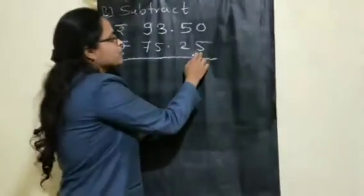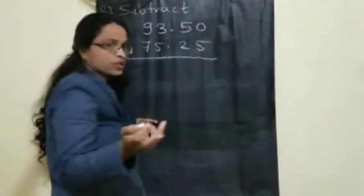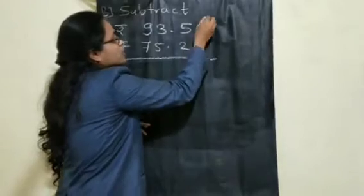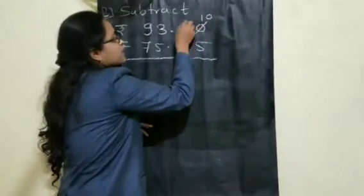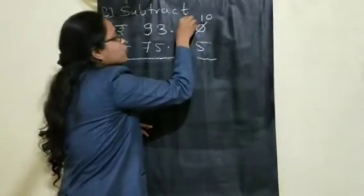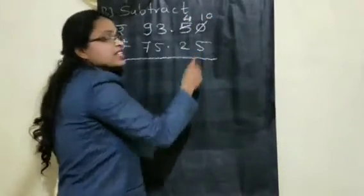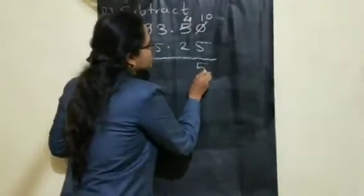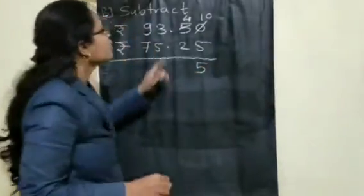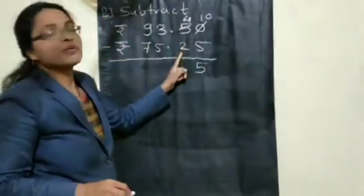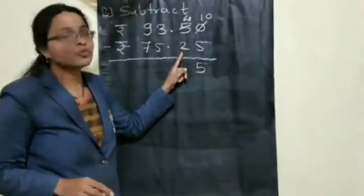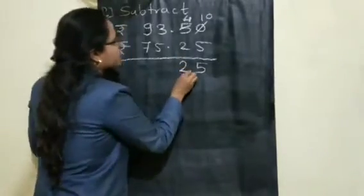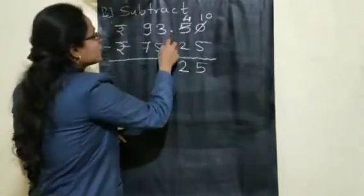Can you subtract 5 from 0? No. So you have to borrow — it will become 10, and how much left here? 4. 10 minus 5 is 5, so write 5. Now, 4 minus 2 is 2, so here you get 25 paise. Write the dot as it is to separate paise and rupees.